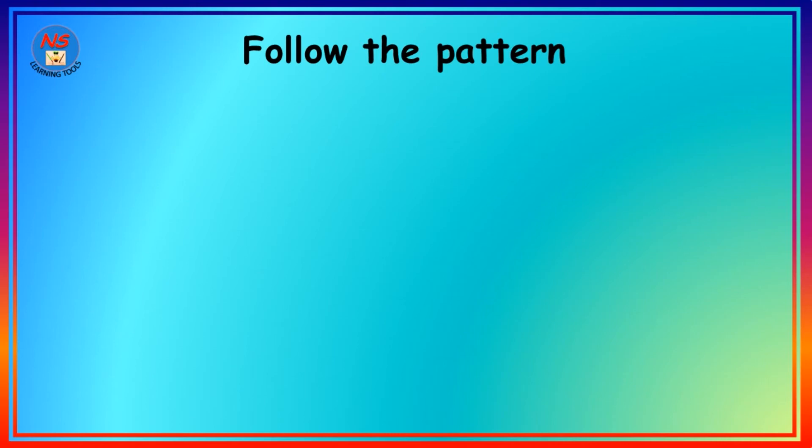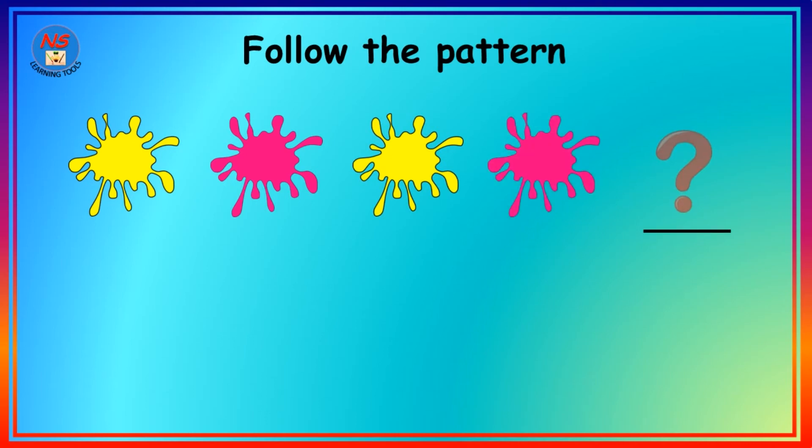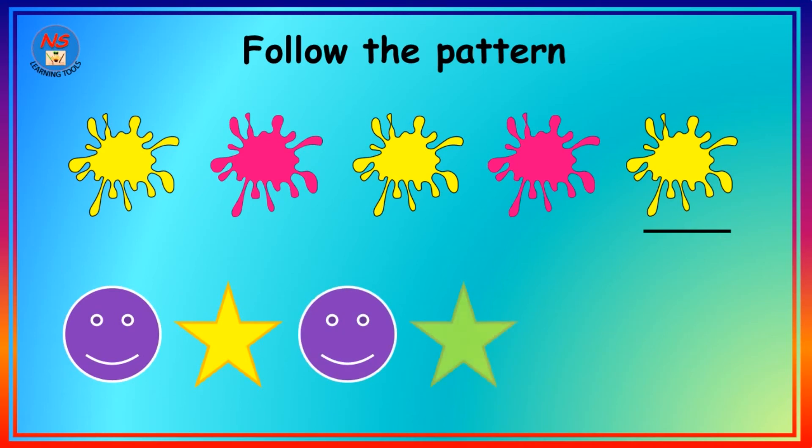Follow the pattern: yellow, pink, yellow, pink. What comes next? Yellow, correct! Circle, star, circle, star, circle. What comes next? Star, correct!